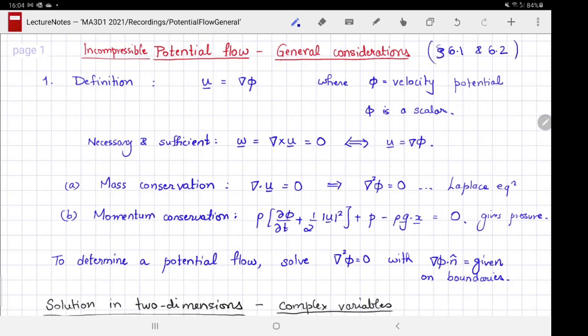Let's start with the definition of potential flow. A flow is called a potential flow if the velocity field can be written as the gradient of a single scalar function phi. Here the scalar phi is called the velocity potential. A necessary and sufficient condition for this to happen is that the vorticity, which is the curl of velocity, vanishes identically, equals zero everywhere.